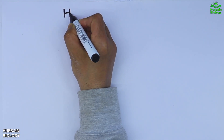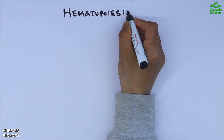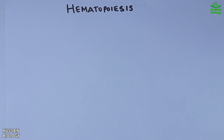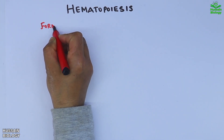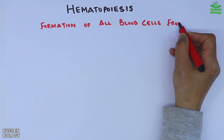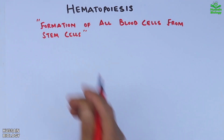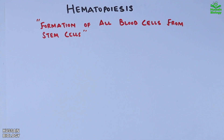In this video we are going to discuss hematopoiesis. Hematopoiesis refers to the formation of all blood cells from stem cells. These stem cells are multipotent and can differentiate into various blood cell types, ensuring our body has a constant supply of red cells, white cells, and platelets.